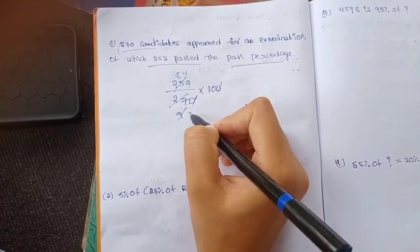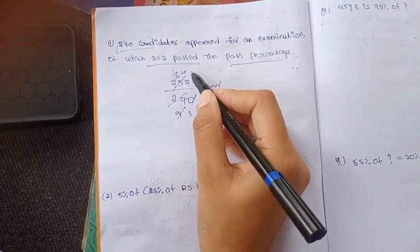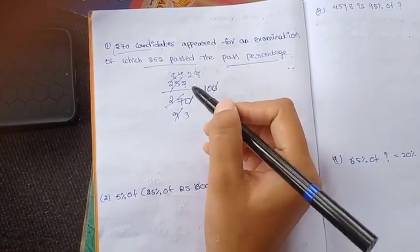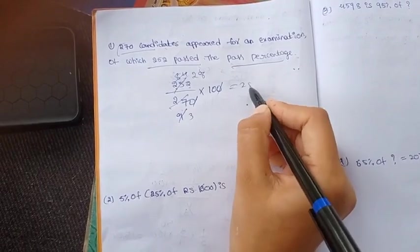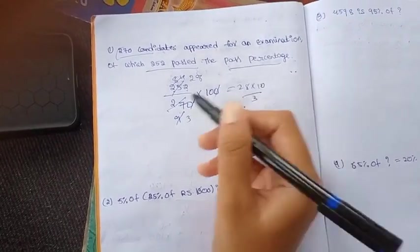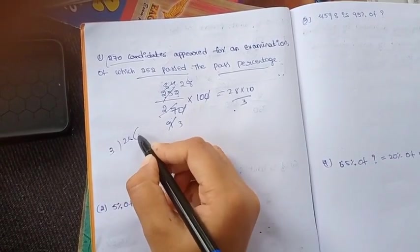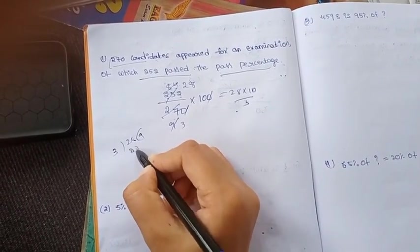Again, three table cancels out three times, it could cancel out two times - 6 and 2, 24 and 8 times. So we get 28 into 10 divided by 3.